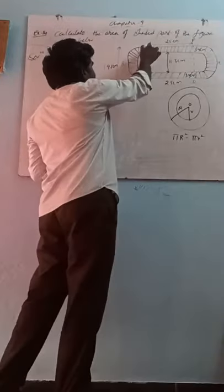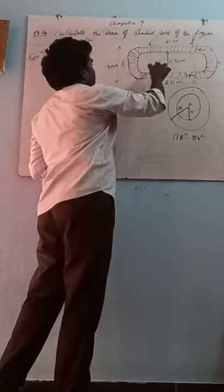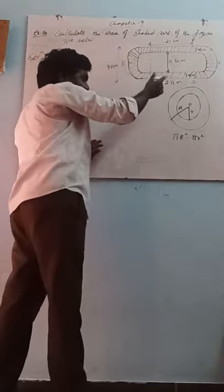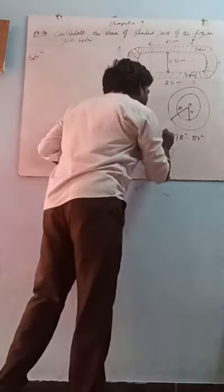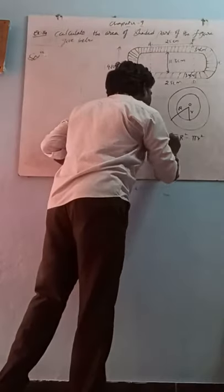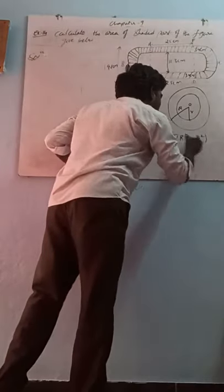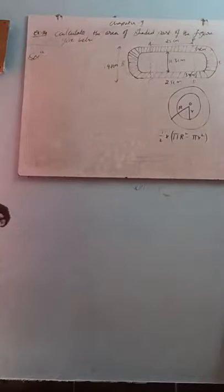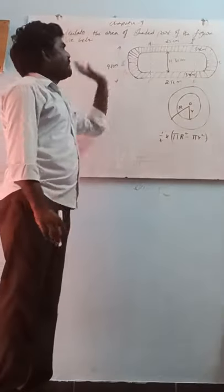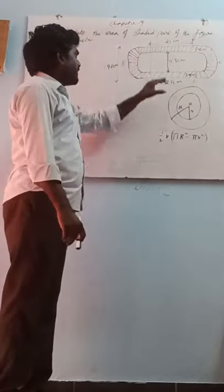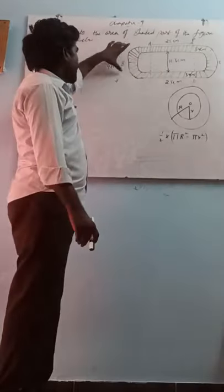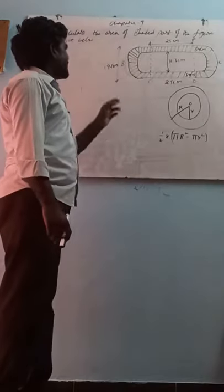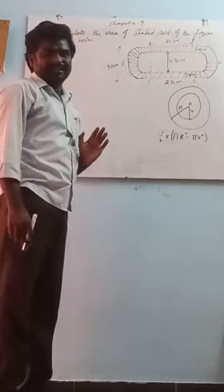Area of the semi-circular path is equal to half of the area of the circular path. That is: one-half into (π R² minus π r²). But given that the inner diameter is 12.3 cm and the outer diameter is 19.1 cm.